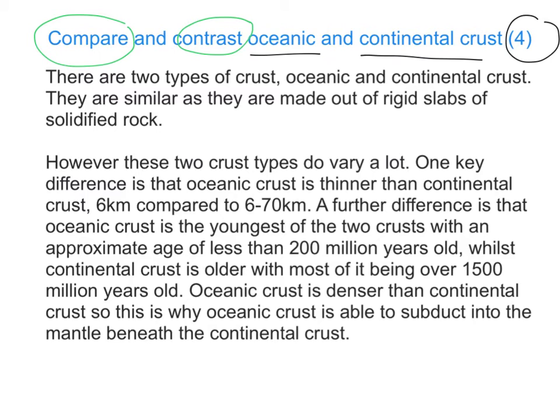The second paragraph goes on to talk about the differences. 'However, these two types of crust do vary a lot. One key difference is that oceanic crust is thinner than continental crust — 6km compared to 6–70km. A further difference is that oceanic crust is the youngest of the two crusts, with an approximate age of less than 200 million years old, whilst continental crust is older, with most of it being over 1,500 million years old. Oceanic crust is denser than continental crust, so this is why oceanic crust is able to subduct into the mantle beneath the continental crust.'